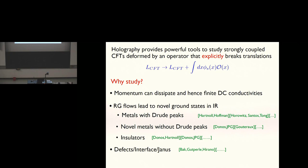You can have metals with Drude peaks when you break translations weakly. You can have strange metals, which corresponds to strongly breaking translations. You can also realize insulators when you have some gap in the power spectrum of the AC conductivity at small frequencies. In a different direction, there's been a long tradition of studying defects or interface theories, also known as JANUS theories, in the context of holography.